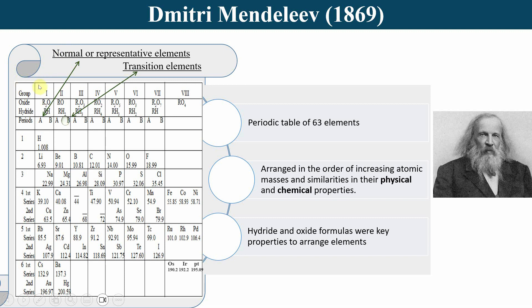Mendeleev recognized that certain elements within a group exhibited distinct properties compared to others in the same group. He classified elements in the A subgroup as the main group elements, which generally displayed predictable and characteristic behavior. On the other hand, the B subgroup consisted of what Mendeleev referred to as transition elements, which exhibited transitional or intermediate properties, often displaying variable oxidation states and showing a transition in their electronic configuration.